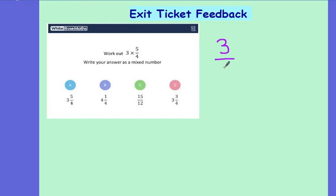So we're going to start in the same way. We're going to write 3 as 3 over 1 times 5 over 4. 3 times 5 gives me 15. 1 times 4 gives me 4.